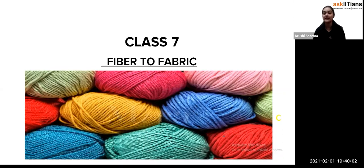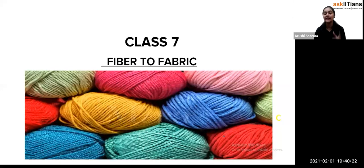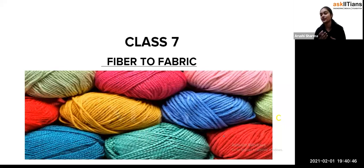This is your first chapter in your Class 7 chemistry syllabus, called Fiber to Fabric. If I'm not wrong, you have studied something about this in Class 6 as well — like natural fibers, plant fibers, and synthetic fibers. In Class 6 you may have learned about natural fibers, and specifically plant fibers. In this session we are going to study more about animal fibers.